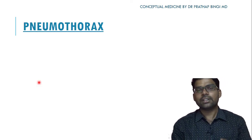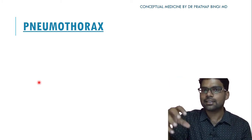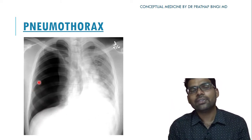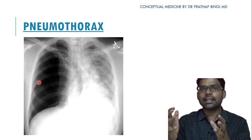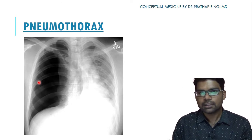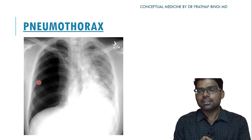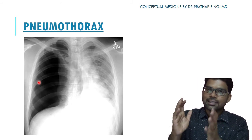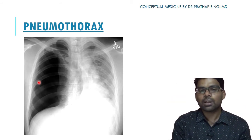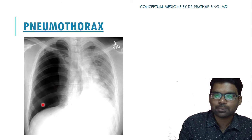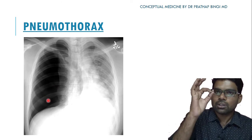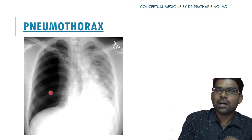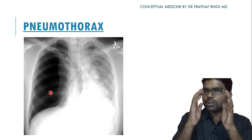Pneumothorax is air collection inside the pleural space. Air is black, so more air in the pleural space obscures bronchovascular markings on that side. If you see a lung that appears hyperinflated and completely black with no bronchovascular markings, this suggests pneumothorax. The key distinction from simple hyperinflation is that pneumothorax is usually unilateral.